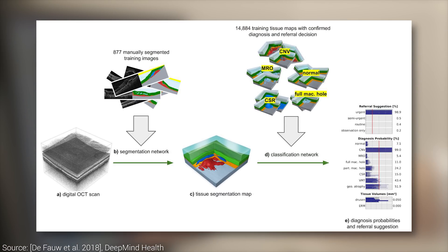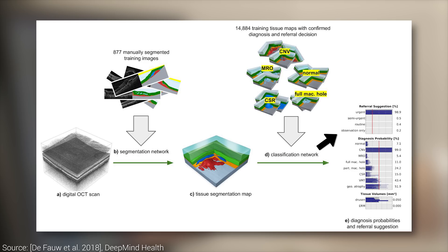Now that we have the segmentation map, it is time to perform classification. This means we look at this map and assign a probability to each possible condition that may be present. Finally, based on these, a final verdict is made whether the patient needs to be urgently seen, or just a routine check, or perhaps no check is required. The algorithm also learns this classification step and creates these verdicts itself.